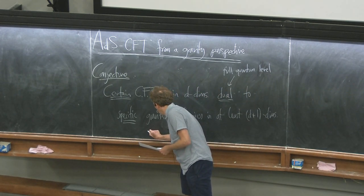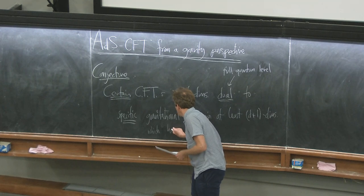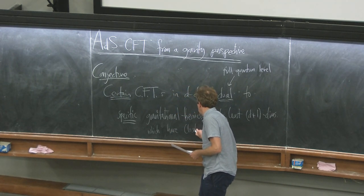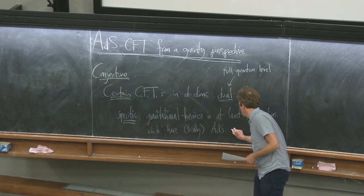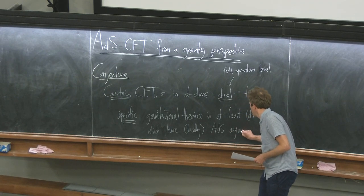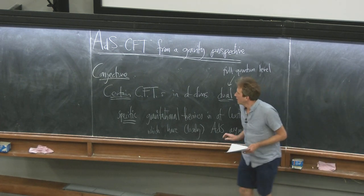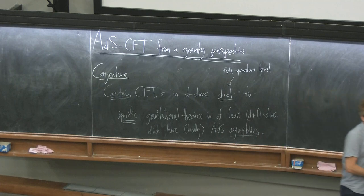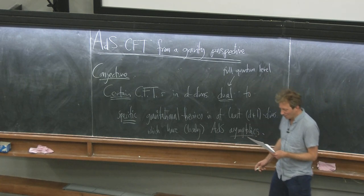These gravitational theories have, at least locally, ADS asymptotics. The name AdS/CFT comes from these two acronyms, and if I do nothing else in these lectures, I want you to have some vague notion of what both ADS and CFT mean.